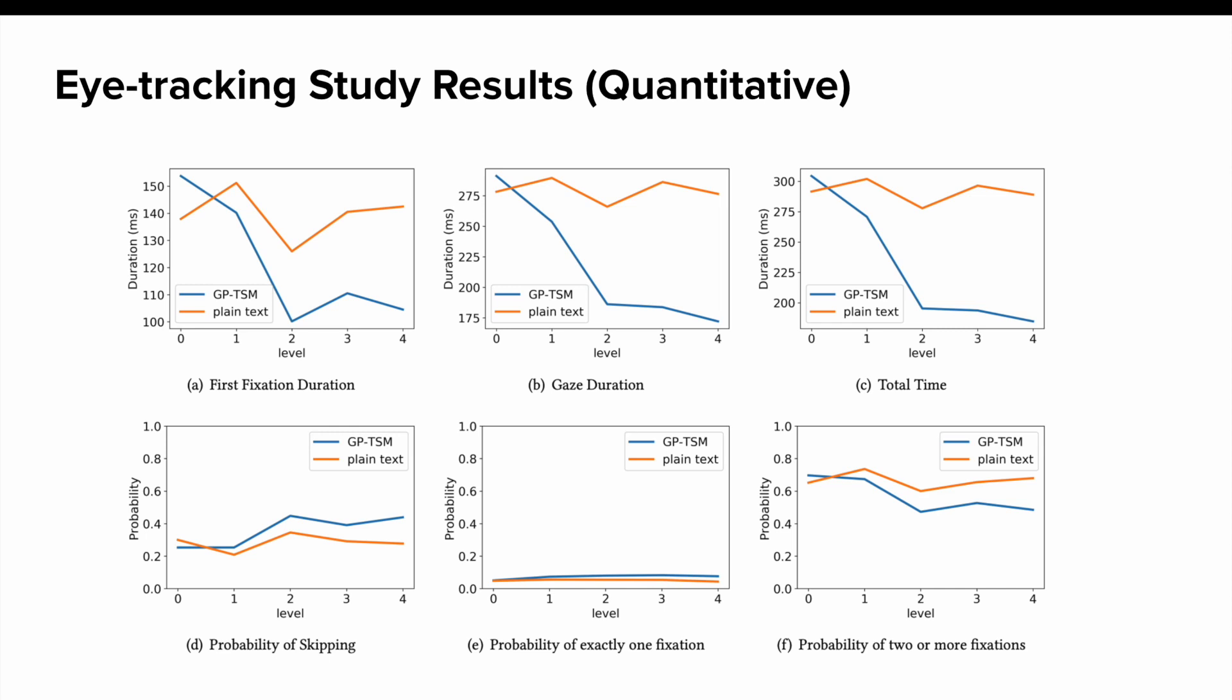Quantitative results suggest that the eye movement of GPTSM readers were influenced by the level of opacity imposed on the text. Linear regression further verified that opacity level significantly predicted the length and probability of fixation.